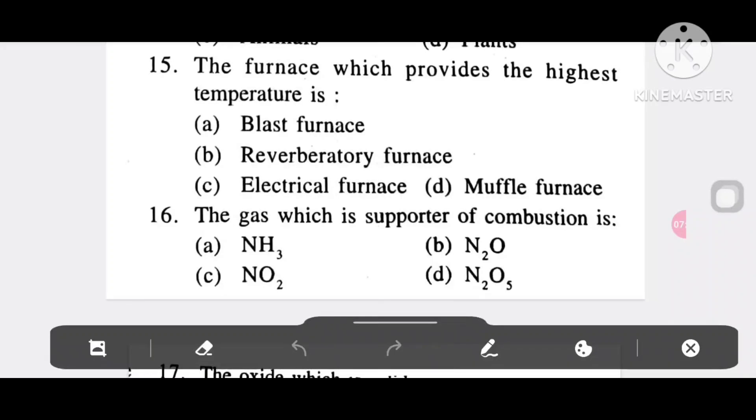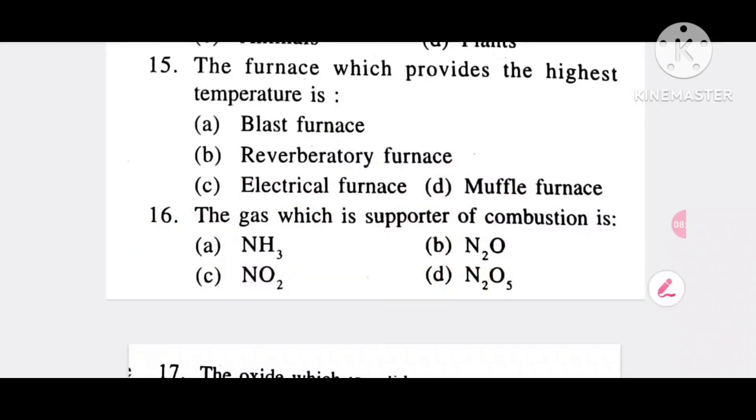Question 15: The furnace which provides the highest temperature is option A, blast furnace; option B, reverberatory furnace; option C, electrical furnace; option D, muffle furnace. It is electrical furnace, option C. Question 16: The gas which is supporter of combustion is option A, N2O3; option B, N2O; option C, NO2; option D, N2O5. It is N2O, option B.